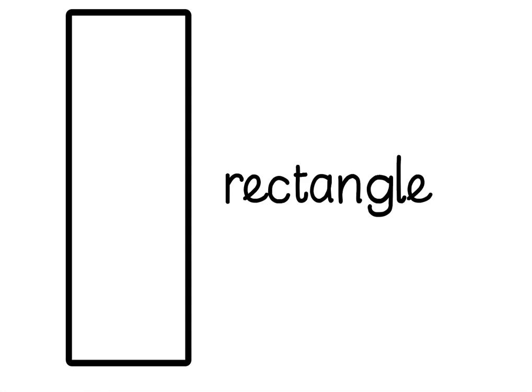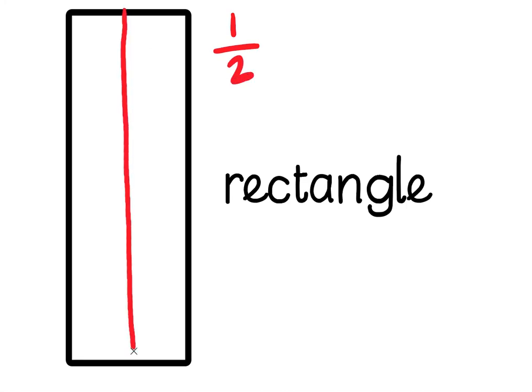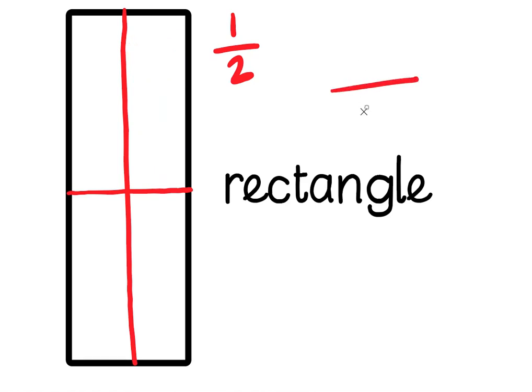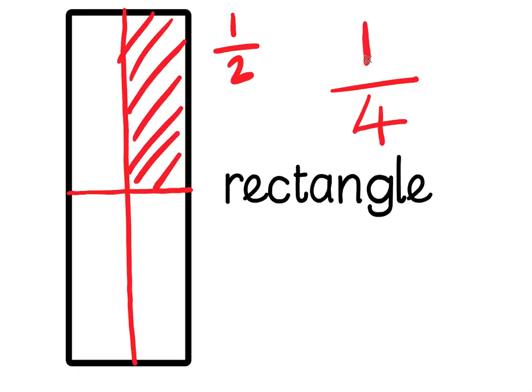Let's choose another one — it's a rectangle. We've been talking about half: one part of a shape that was cut into two. But if I cut it like this — how many have I cut it into? I've cut it into four, and if I colour one in, it's one part of a shape that was cut into four, all parts the same size.